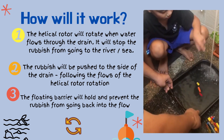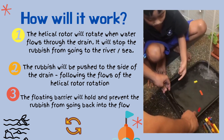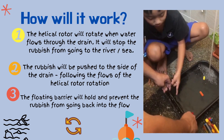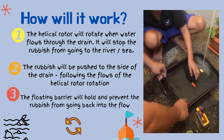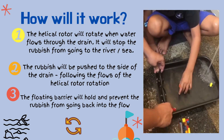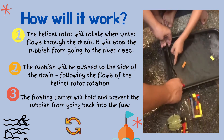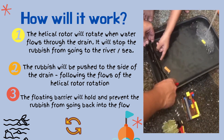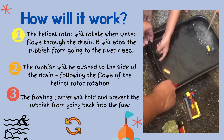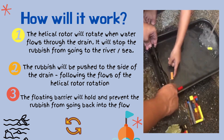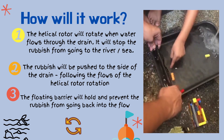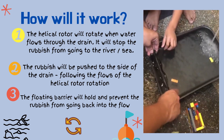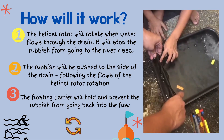And when it rains, the water goes through the drain, and it makes the helical rocker rotate. The rubbish will end up in front of the helical rocker, and the helical rocker will rotate. And when the helical rocker rotates, the rubbish gets put aside and into the rubbish cleaning system.